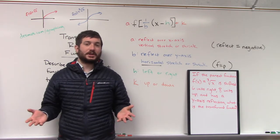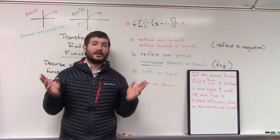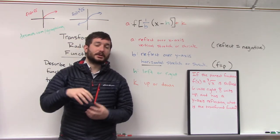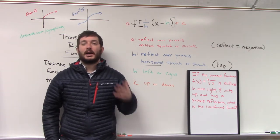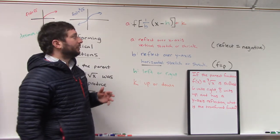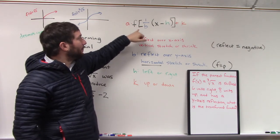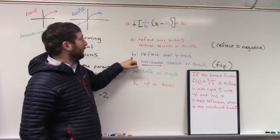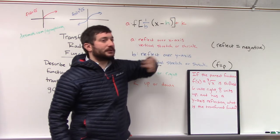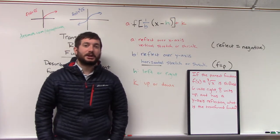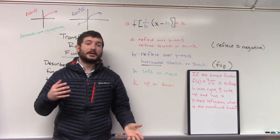We saw how functions in general, all of which have graphs, can be transformed in certain ways. Functions in general, f of x, can be transformed up or down, left or right. They can be vertically stretched or shrunk, horizontally stretched or shrunk, even flipped or reflected over the x and y axis, depending on how you change the parent or original function by multiplying in front — changing a value for a — or multiplying inside the function, changing what we call b, or adding/subtracting inside the function, which changes h, or adding/subtracting on the outside, which changes k. We saw how these individual transformations can occur, and also how they can occur more than once.